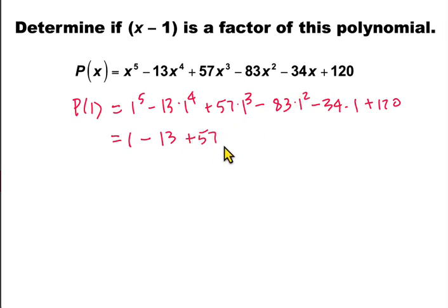1 squared is also 1, so minus 83, minus 34, plus 120.